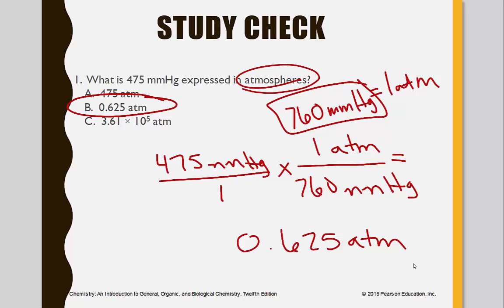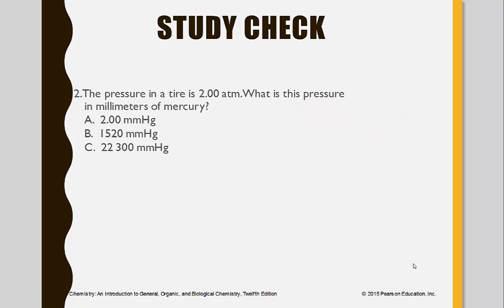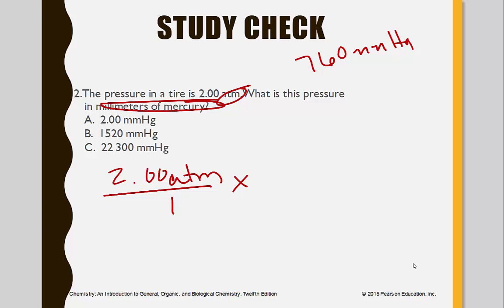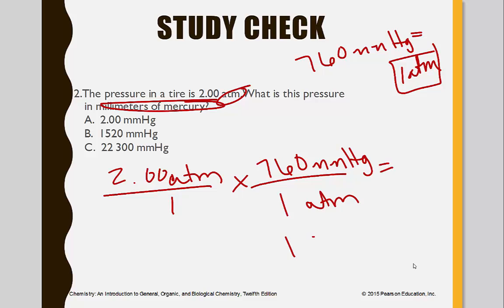And then finally, similar to that one, 2 atm over 1. Once again, we're going to millimeters of mercury and atm is going to be our equality we're going to use. Atm's are on the top. That means we want to put that on the bottom. 1 goes with atm. 760 millimeters of mercury go on the top. So 2.00 times 760, that comes out to 1,520 millimeters of mercury, which is B. And those are the units of pressure.